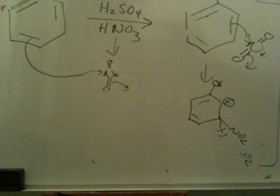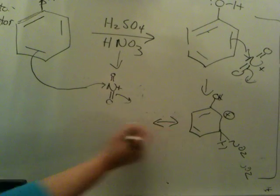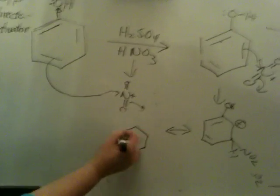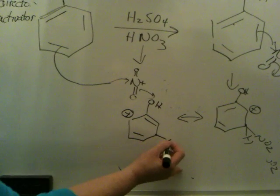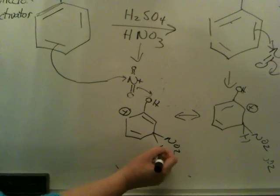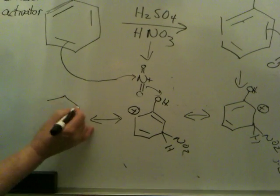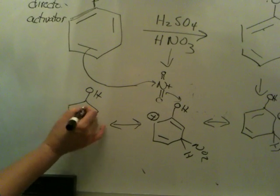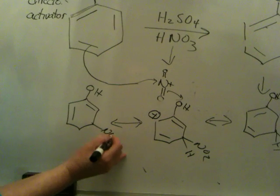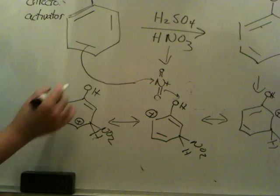Now what's different about this cation? It is allylic. But let's draw the resonance forms. If we draw the resonance forms, you will notice that the charge misses the site bearing the OH. So in this case, when we do meta attack, we only get three resonance forms in the hybrid.